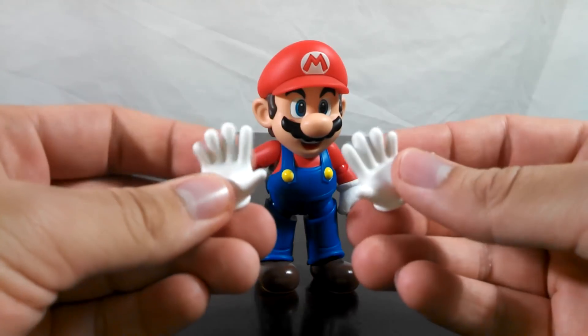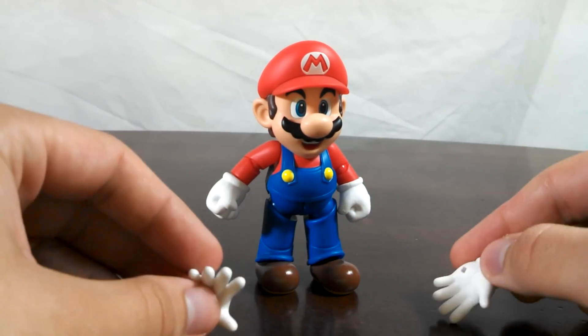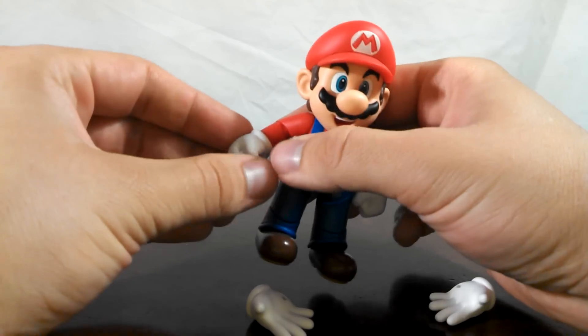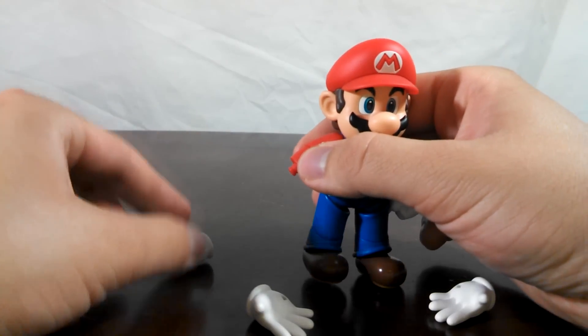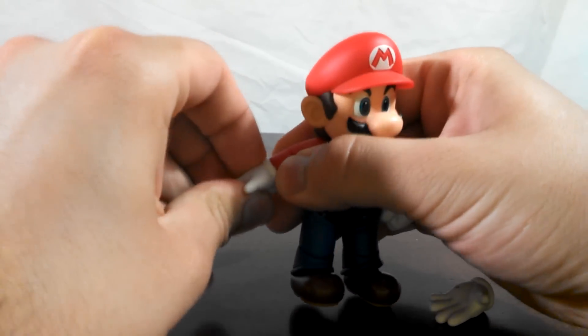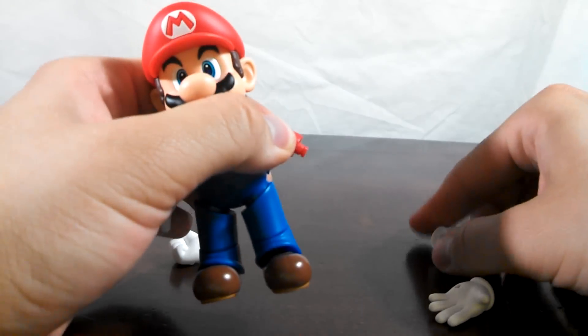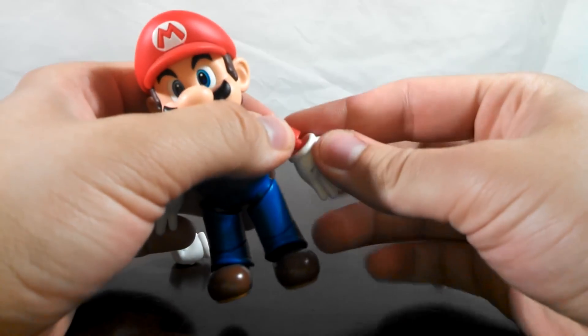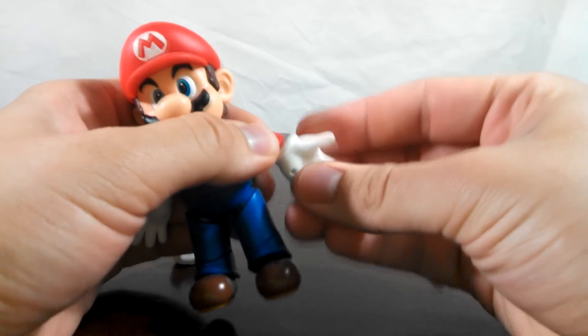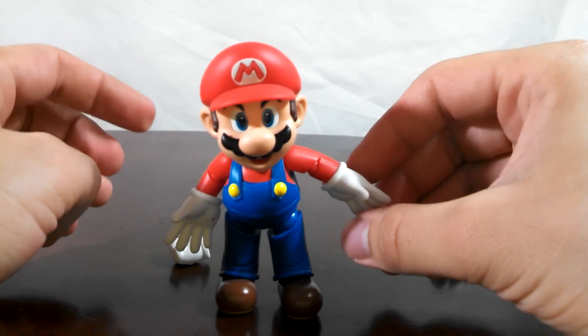The set also comes with these splayed hand parts with little holes in them. Swapping them out is pretty easy. All you have to do is remove the hand that's currently attached and then just pop the new ones onto the peg. This hand on mine doesn't necessarily like to go on too well, but with a little bit of effort, you can get them on.